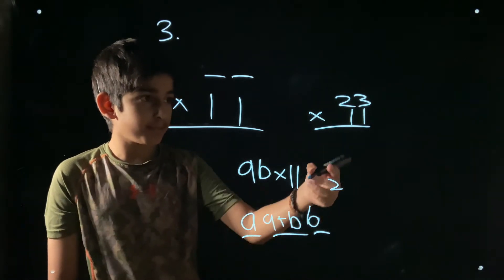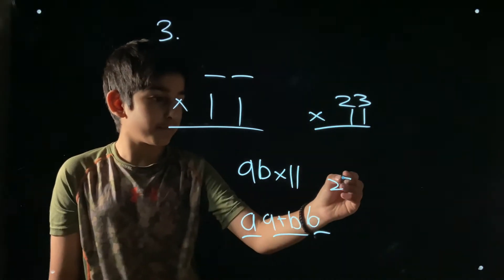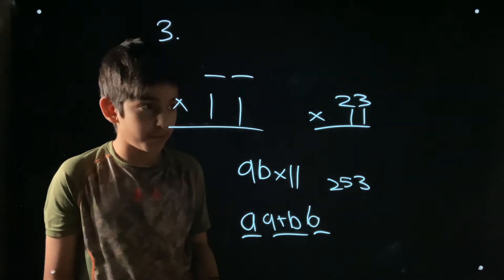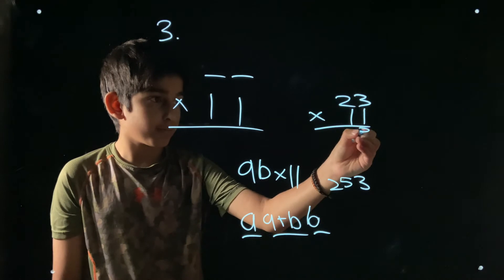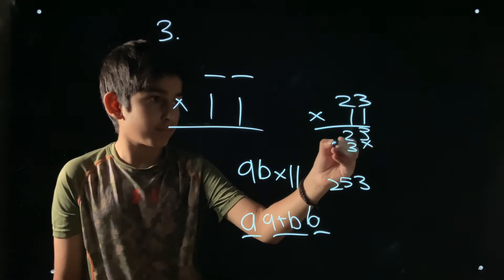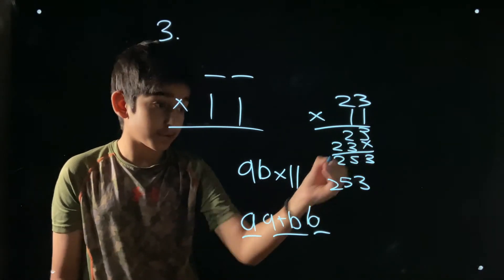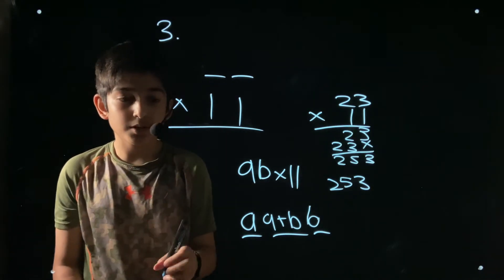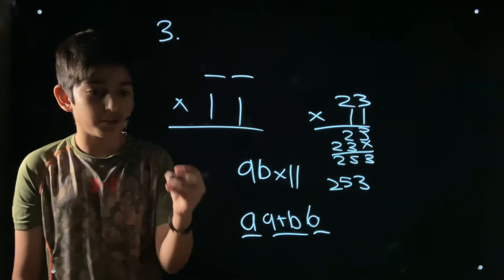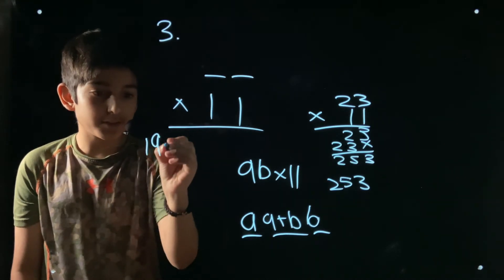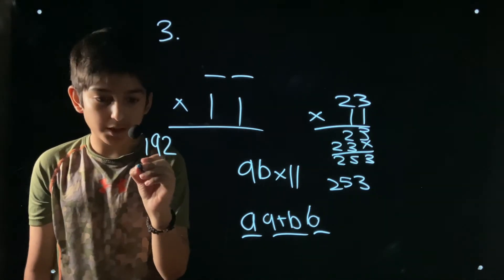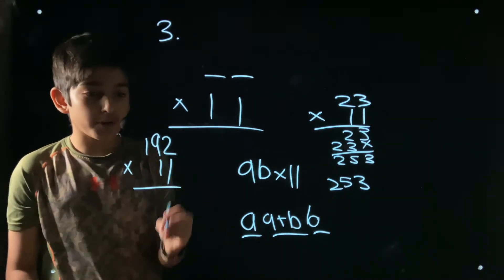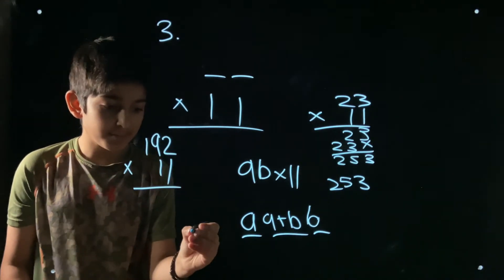For example: 23 multiplied by 11. Using the trick: put 2 first, then 2 plus 3 equals 5 in the middle, then 3 at the end. The answer is 253. We can verify this by calculating normally — it's correct!